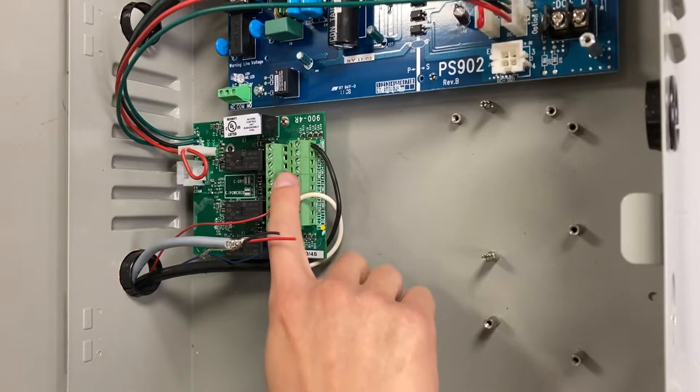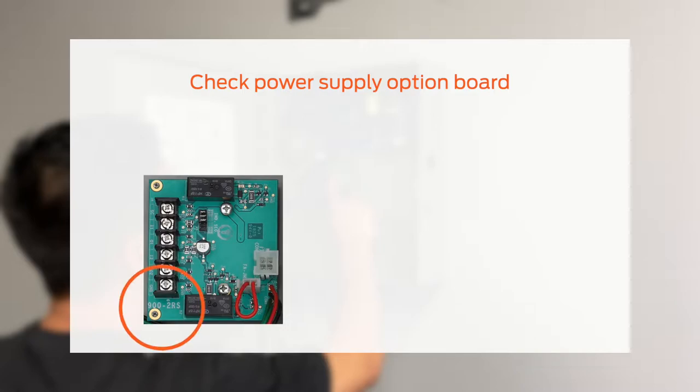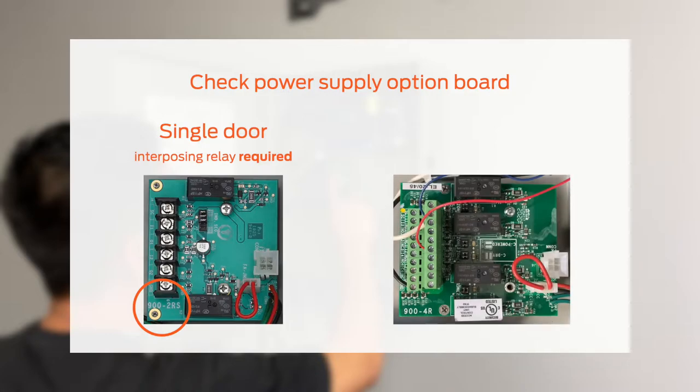If connecting to the power supply to electrically isolate the ESL from your access system, check the model type of the option board. A 900-2RS option board can work on a single door, but an interposing relay must be used to connect to your alarm or access system. A 900-4R board will work for either a single door or a pair of doors and does not need an interposing relay.